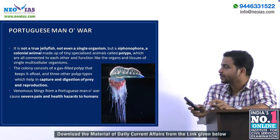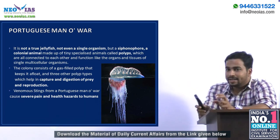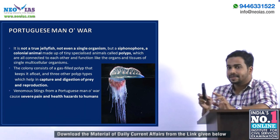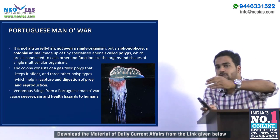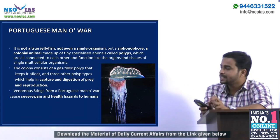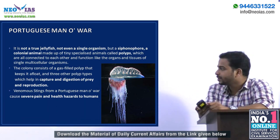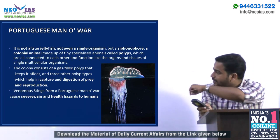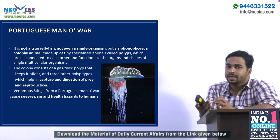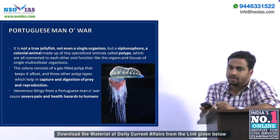The Portuguese Man-of-War colony consists of a gas-filled polyp which helps the organism float above the water level, and three other polyp types which help in the capture and digestion of prey and in reproduction. You can see things hanging down — if the sting comes into contact with human skin, it can cause health hazards.